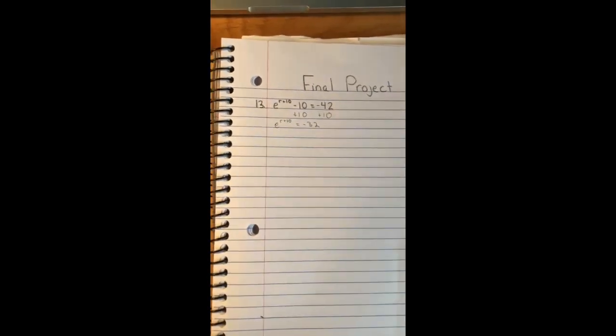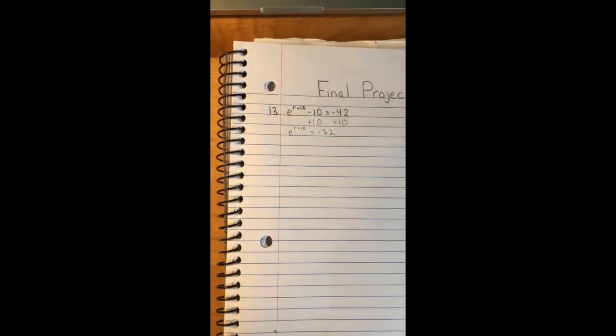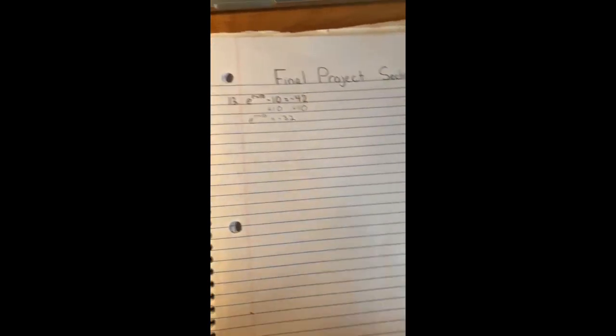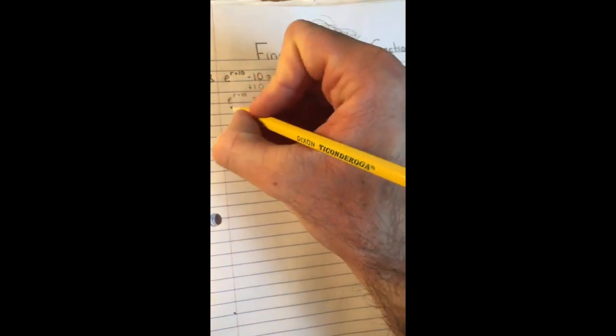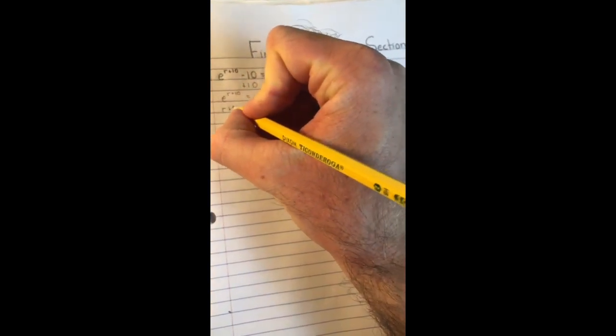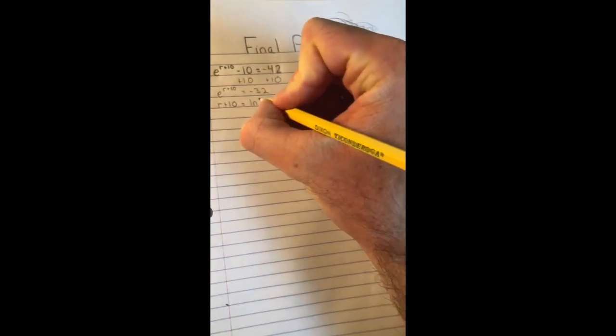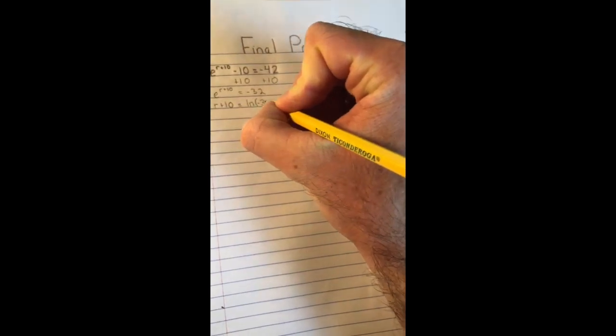The next step at this point is going to be to take the natural log of both sides. We know that the natural log and E to the X are inverse functions. So if we take the natural log of this, we will actually be left with R plus 10.